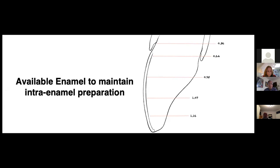You want to keep veneer preparations in enamel for the best bond to the enamel surface. Sometimes you have no choice and some dentin may be exposed. If dentin is exposed, look at Pascal Magne's work on immediate dentin sealing — seal the dentin surface and get a bond onto it. Recently he presented on heating the bonding agent; to be published in the Journal of Prosthetic Dentistry. He found that heating the bonding agent greatly magnified bond strength to the dentin surface using the Optibond material.